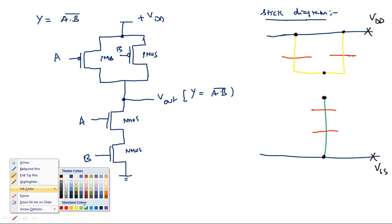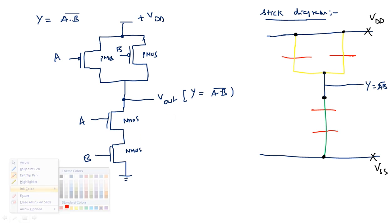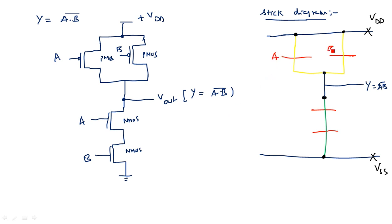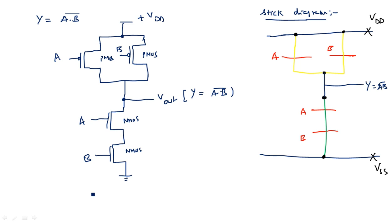Take blue color and extend it as the output line representing Y = AB̄. Wherever you have the inputs, connect them with their labels: this gate is A and this gate is B for both the pMOS and nMOS transistors. This is the complete stick diagram for the CMOS two-input NAND gate. Once familiar with stick diagrams, it is easy to move on to layout diagrams. Thank you.